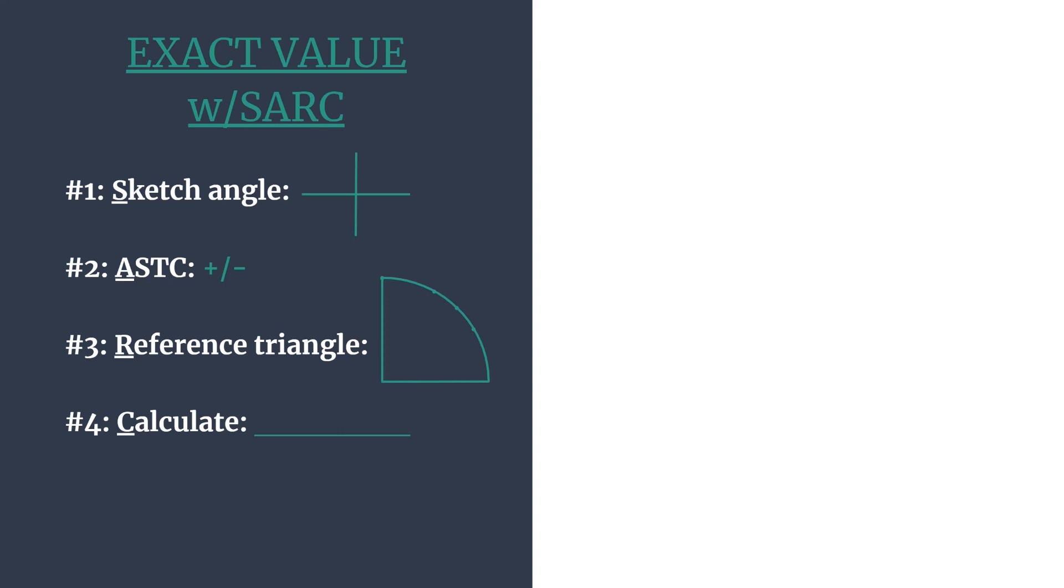So a quick breakdown: S stands for sketch the angle, so we'll sketch the angle terminal side and we'll know which quadrant we're in. The A stands for ASTC which is another little acronym and it tells us which trig functions are positive in each of the quadrants.